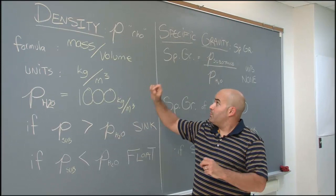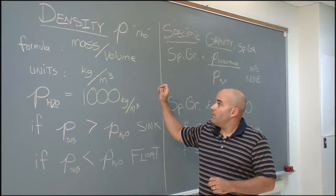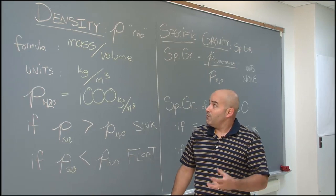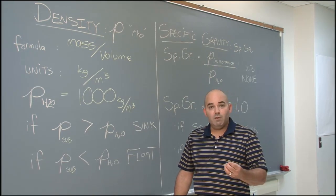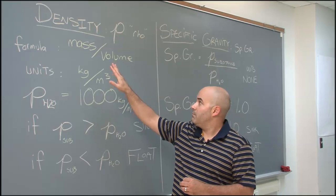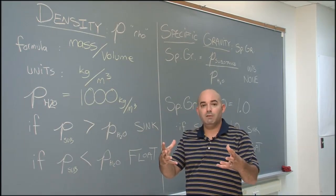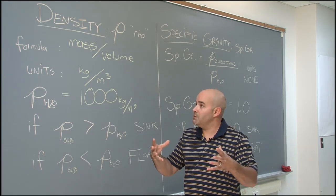Density. It's abbreviated with the Greek letter rho, and just like everything else in physics, it's got some units, it's got a formula. Here, the formula actually gives us the definition of what density is. The formula, mass divided by a volume. What is density? It's how much mass there is in a specific volume of some substance.